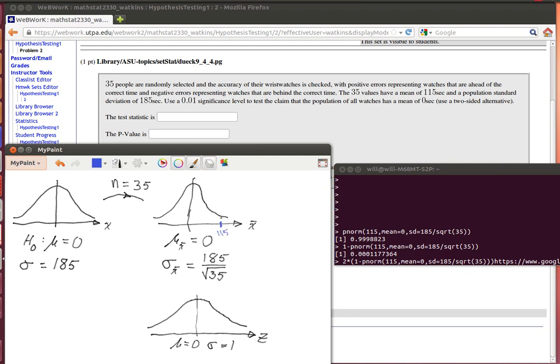To find the p-value, we're going to need to find this area and then two times that area because it's a two-tailed test. Notice that the alternative hypothesis here is that mu is not equal to zero, so that's telling us this is a two-tailed test. We have to put that much up there and find that much down there.